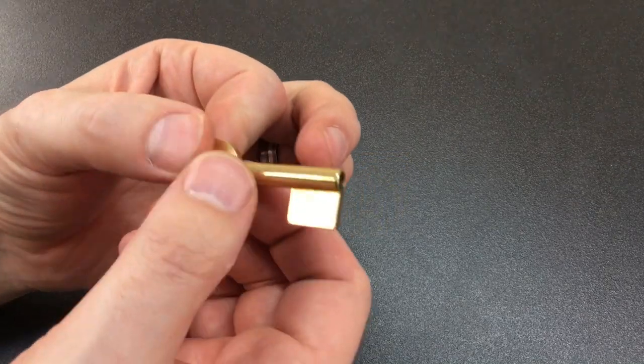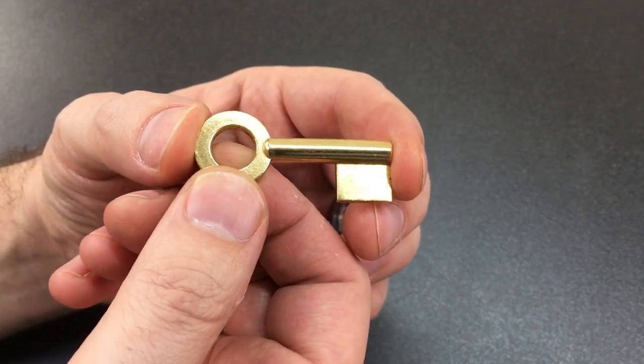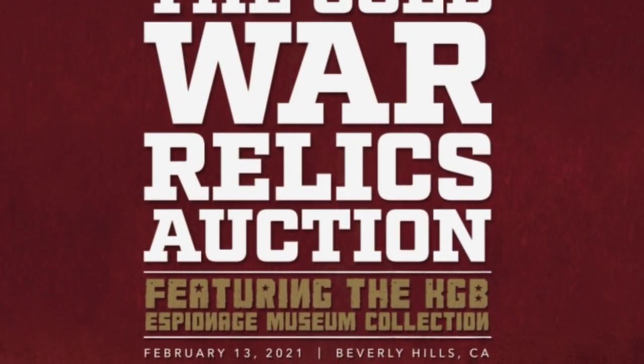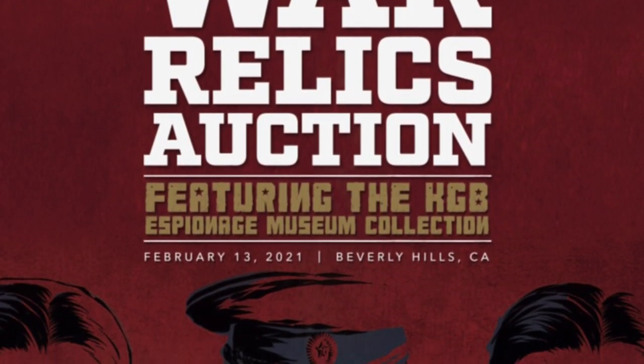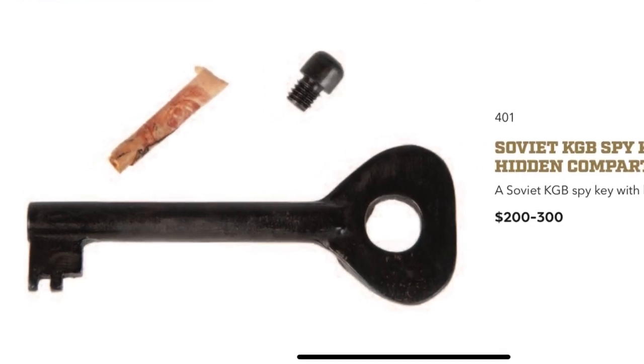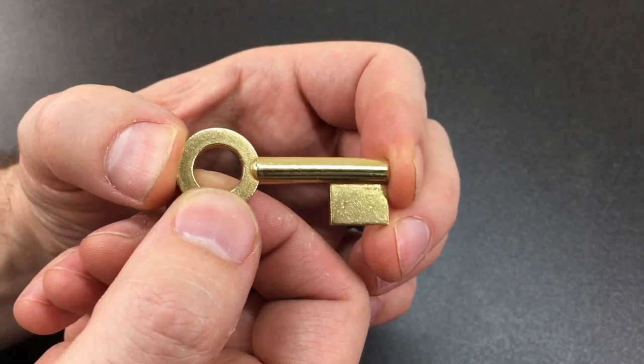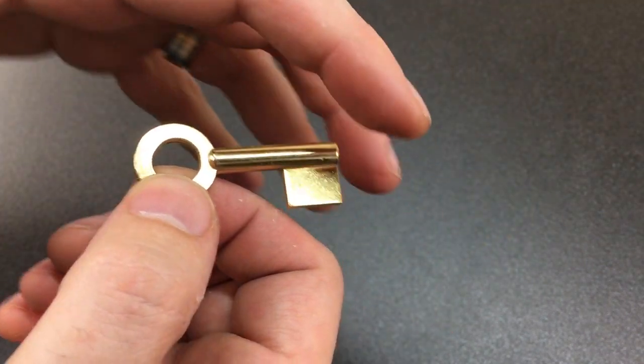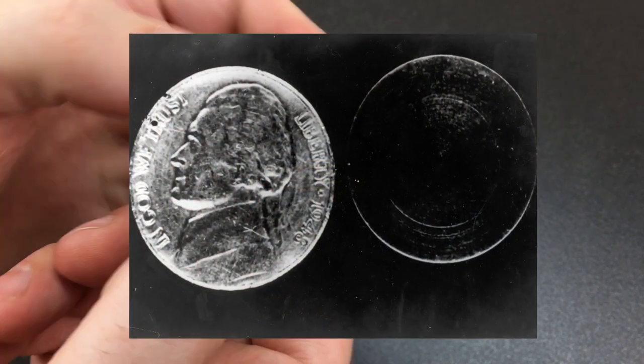Hello again, it's Lock Noob. Somebody sent me a link to a really amazing auction full of old Soviet stuff, and one of the things in there was a key which I guess was for spies or agents to hide notes.